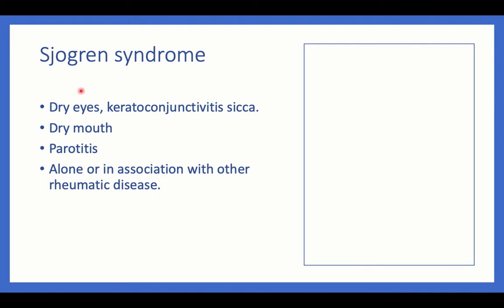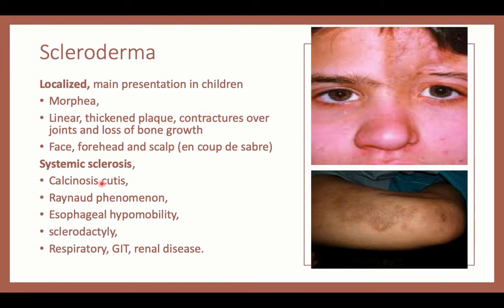Sjögren's syndrome is also a triad: dry eyes (keratoconjunctivitis sicca, which can lead to ulceration), dry mouth, and salivary gland infection or parotitis. This can occur as a lone single entity or be associated with lupus or other rheumatological diseases.